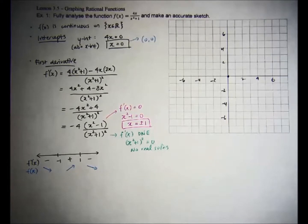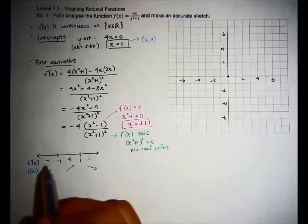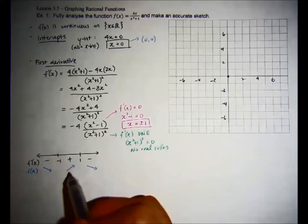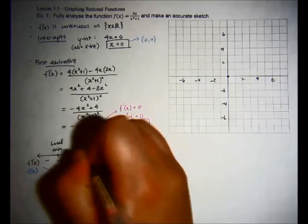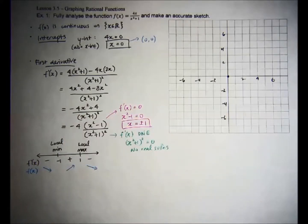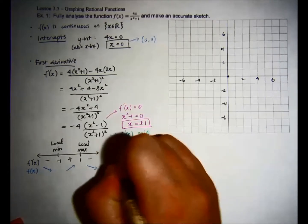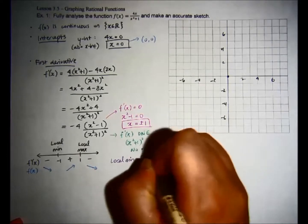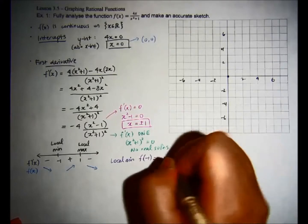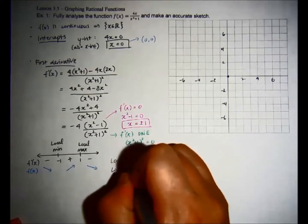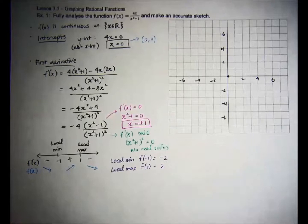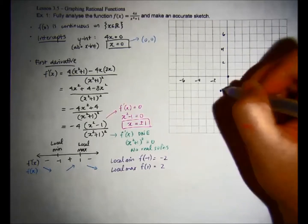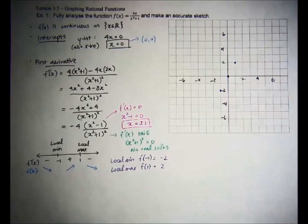That tells us we have a local minimum at x equals negative 1 (decreasing to increasing) and a local maximum at x equals 1 (increasing to decreasing). The local minimum at x equals negative 1 gives f of negative 1 equals negative 4 over 2, so negative 2. The local maximum at x equals 1 gives f of 1 equals 4 over 2, so positive 2. We can plot those points: negative 1, negative 2 and 1, 2.